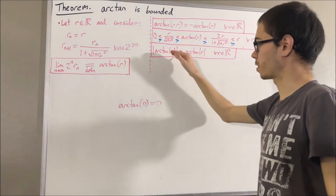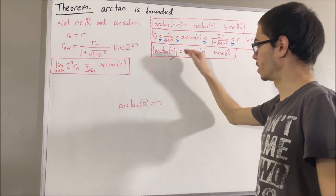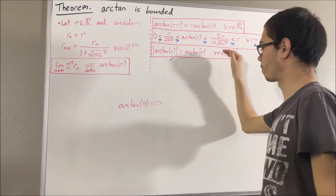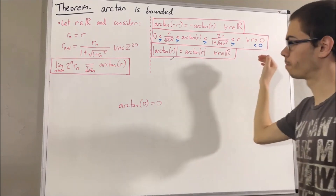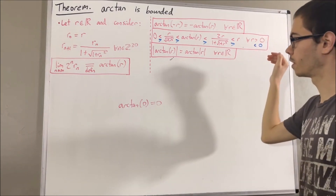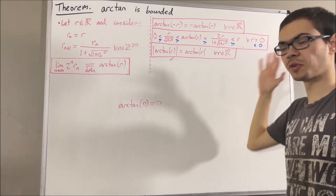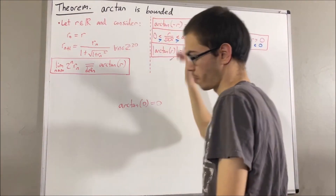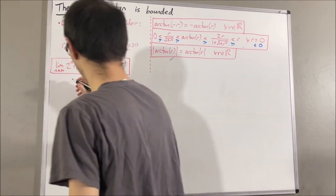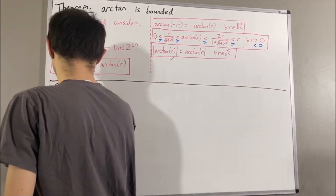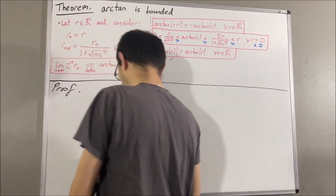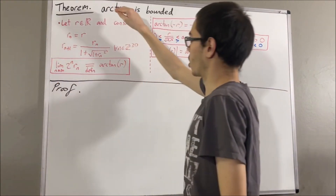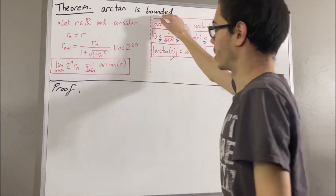The arctangent of arctangent of r equals the arctangent of arctangent of r for all real numbers r. Okay, so now let's get into proving the theorem. First of all, what does it mean for the arctangent function to be bounded?